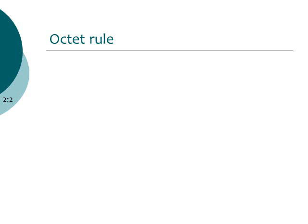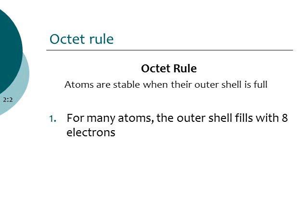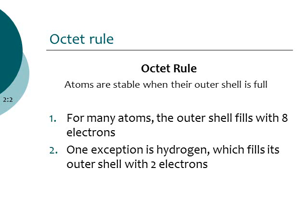Atoms want to fill up their outer shell to eight electrons — this is called the octet rule. Atoms are really stable when that outer shell is full with eight electrons. There's one exception: hydrogen only has a first electron shell, which can hold two electrons. Everything else — all other atoms — want eight electrons in their outer shell.